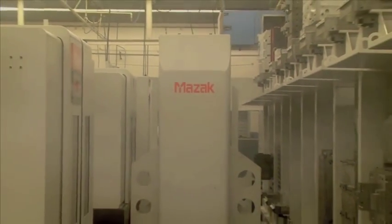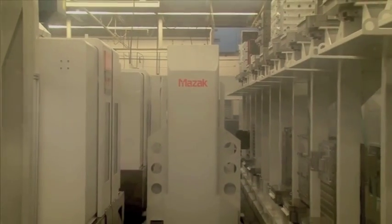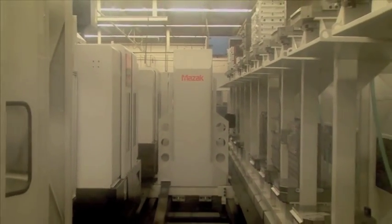Again, 28 pallets. These machines are both full 5-axis. This is a 28 pallet system hooked to two full 5-axis Mazak Variaxis 630Ts with a cell controller.